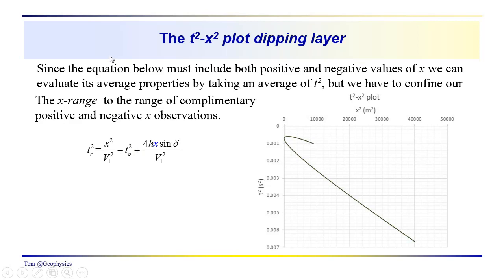You can see that the sine here will change depending on the sine of X. We have both positive and negative values of X. How do we analyze this data? We could take an average of this data and then fit a straight line to it. But we'd have to confine our analysis to the range of X, to a range of complementary positive and negative X observations.